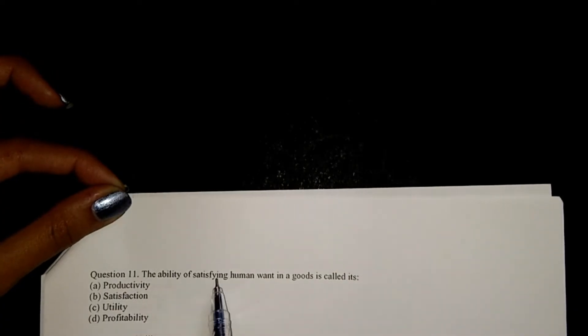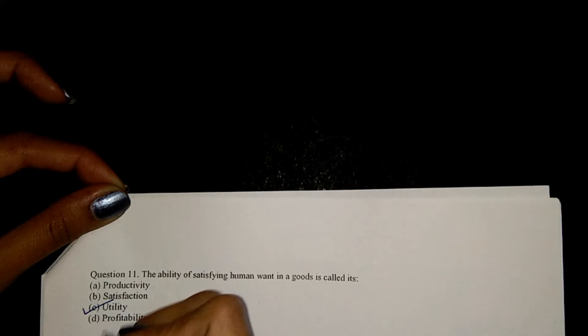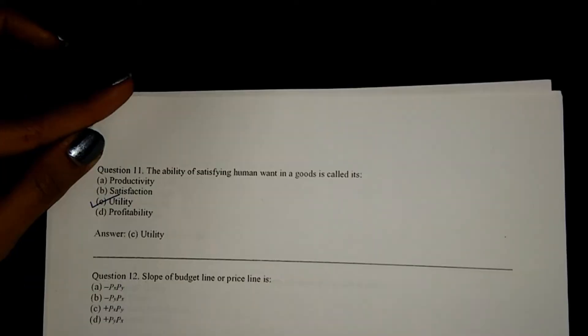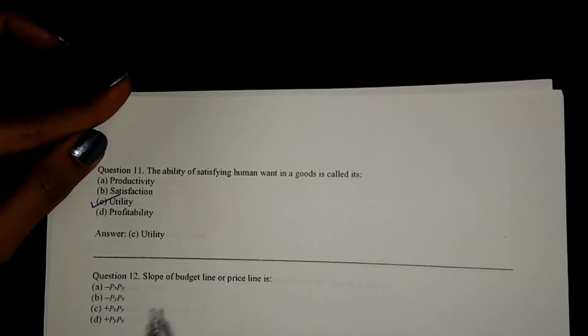Next, the ability of satisfying human want in a good is called its C, utility. Next, slope of budget line or price line is option A.